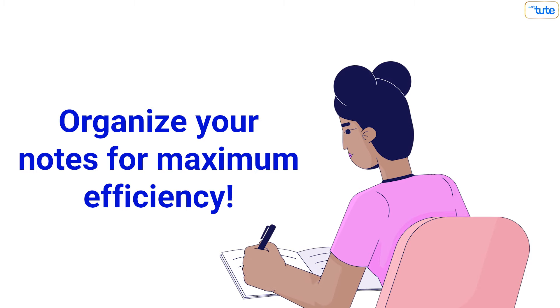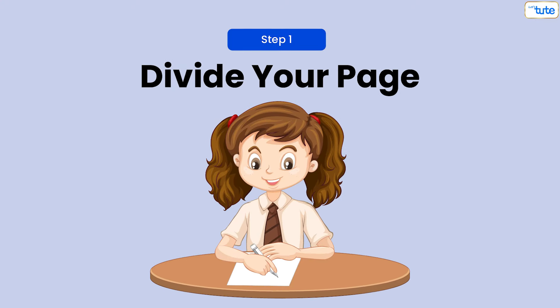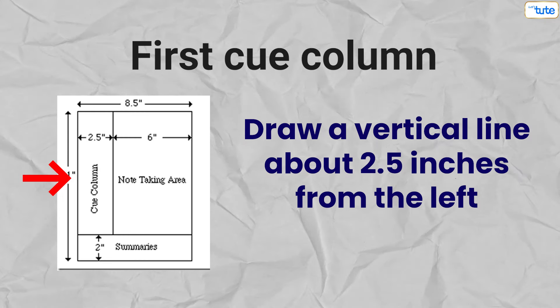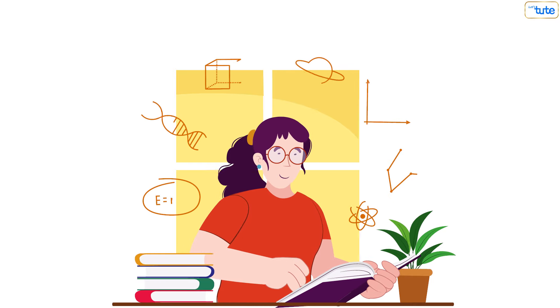Step 1: Divide your page. Start by dividing your page into three sections. First, cue column: draw a vertical line about 2.5 inches from the left. This is where you'll jot down key terms and questions.